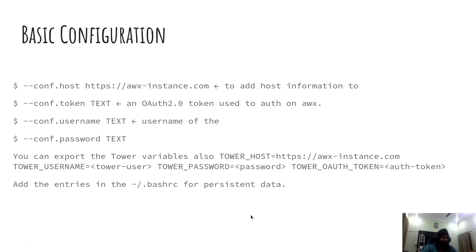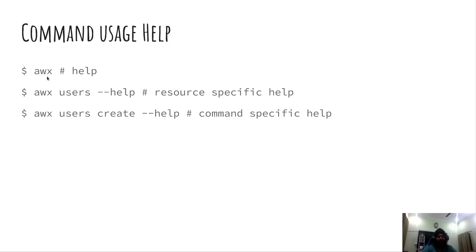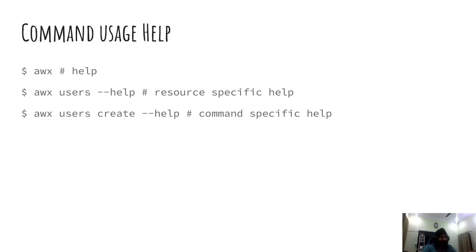Regarding command usage help, it's pretty simple. If you want help with the AWX command, simply type 'awx --help'. It will show you what kind of resources are available on AWX, authentication parameters, and output formatting options so you can manipulate how you want to view the output.